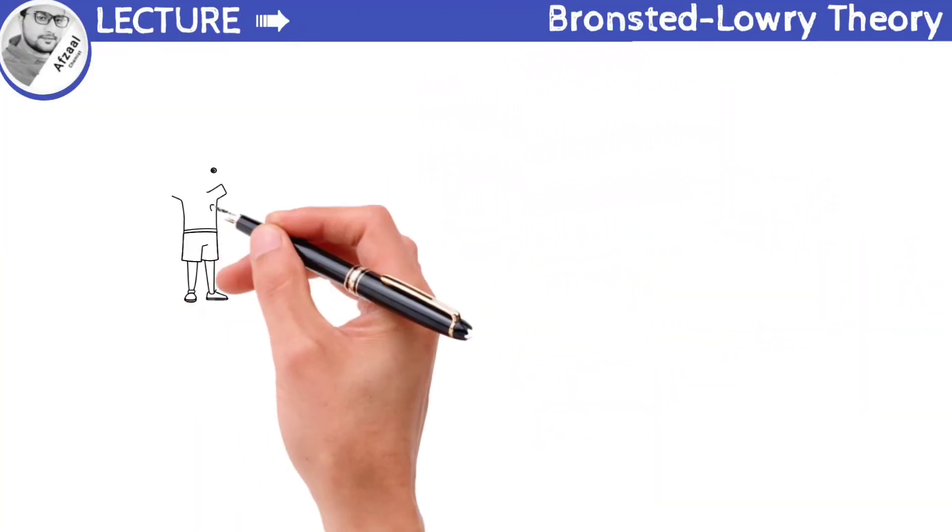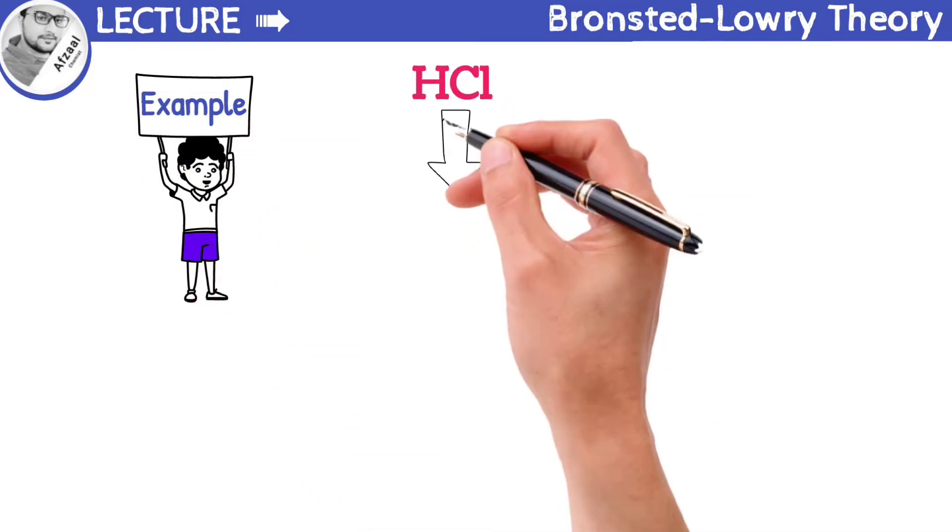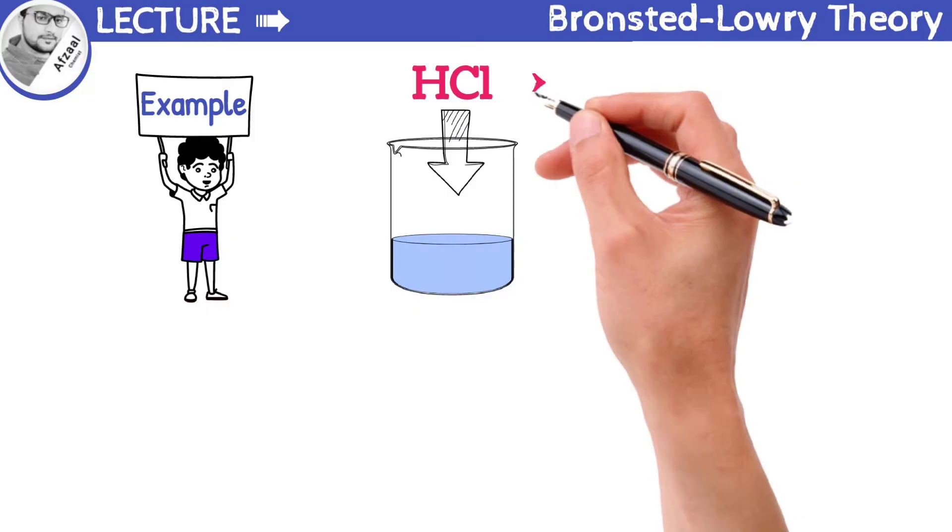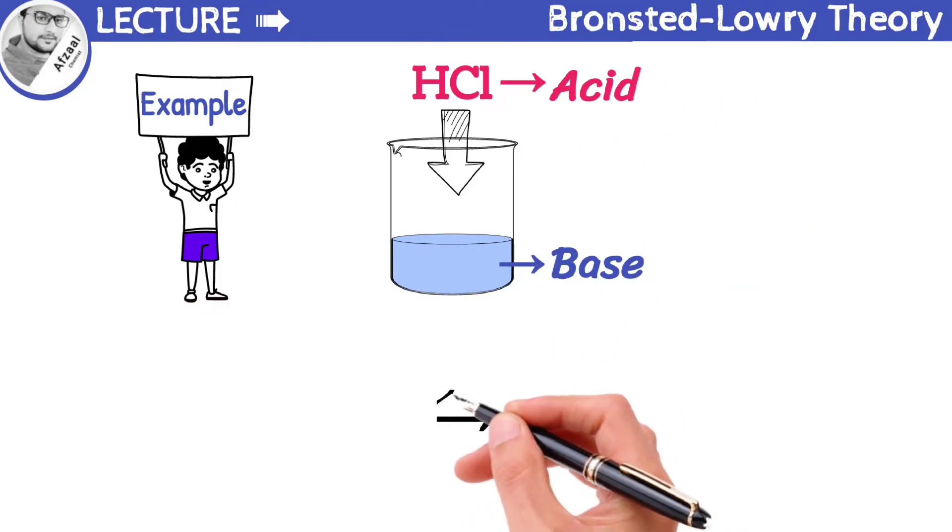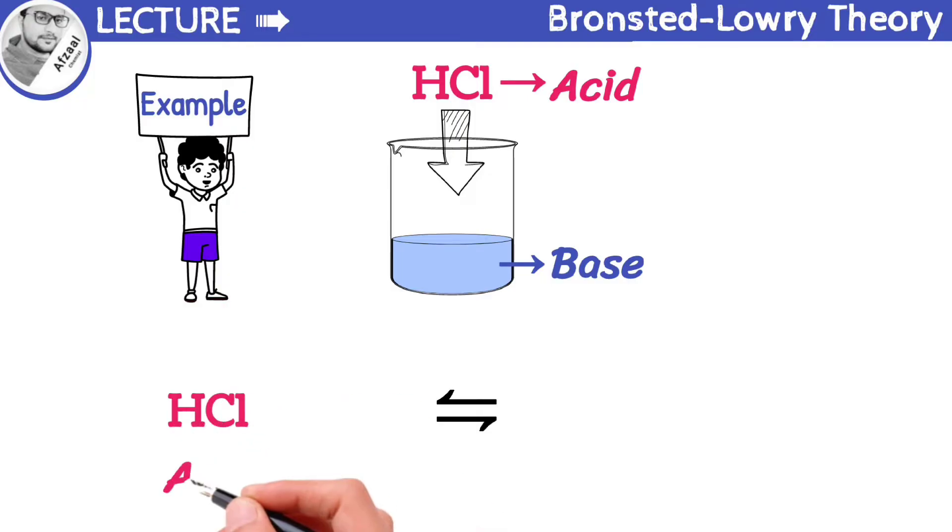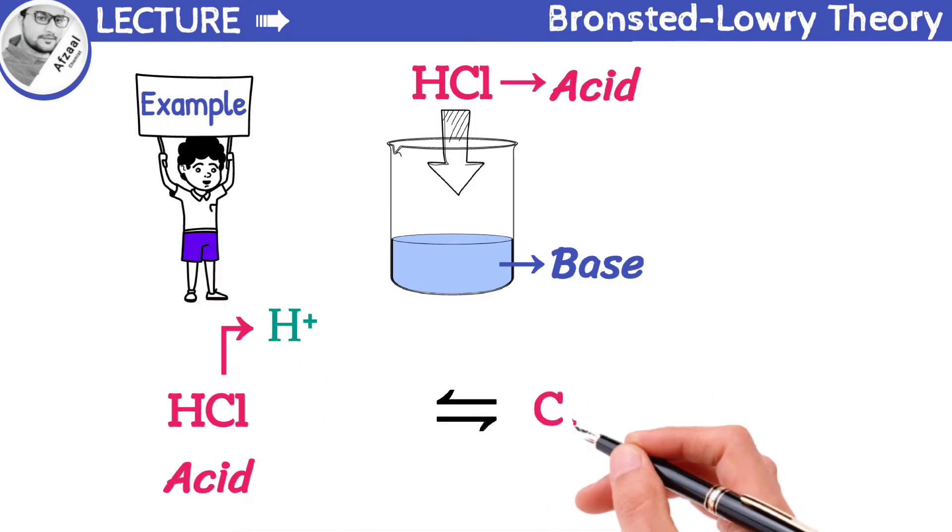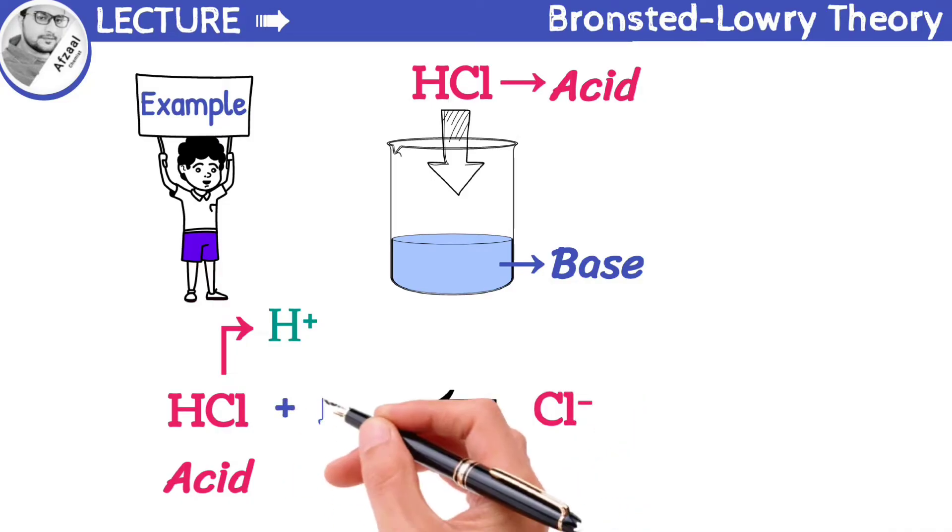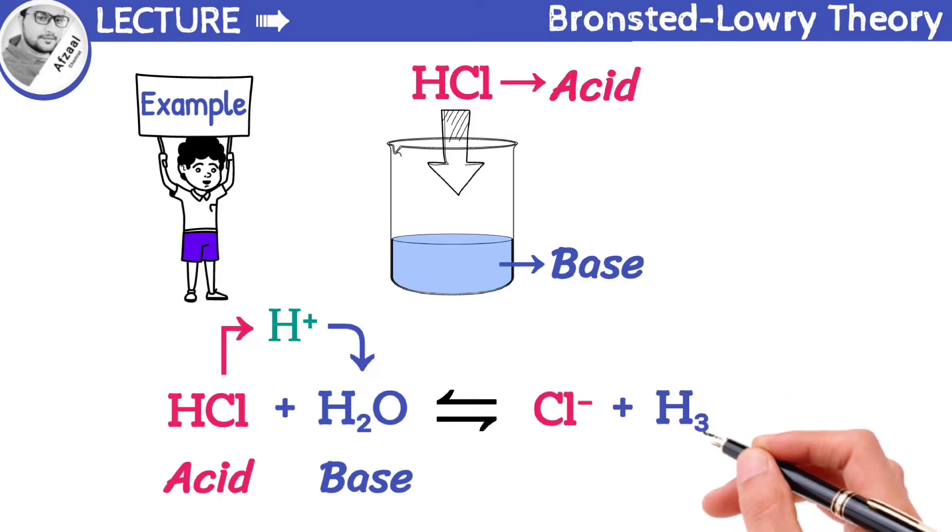Let me explain this concept with an example. When HCl dissolves in water, hydrochloric acid acts as an acid and water is a base. It is a reversible reaction. In the forward reaction, HCl is an acid because it donates a proton and converts into chloride ion. Whereas, H2O is a base as it accepts a proton converting into hydronium ion.